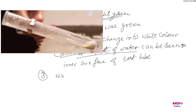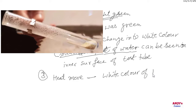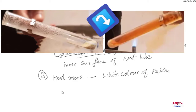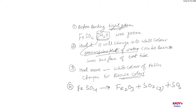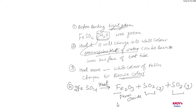When we heat more, the white color of ferrous sulfate changes to brown color. Why brown color? By heating more, the white ferrous sulfate decomposes into ferric oxide, sulfur dioxide, and sulfur trioxide. Ferric oxide is of brown color.